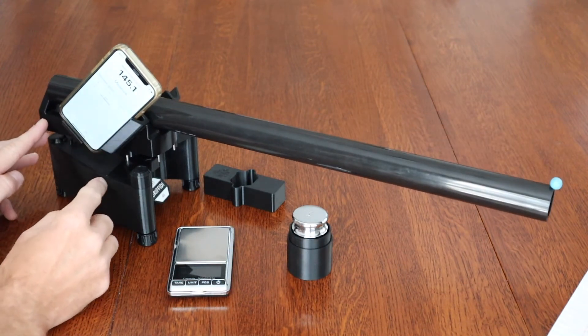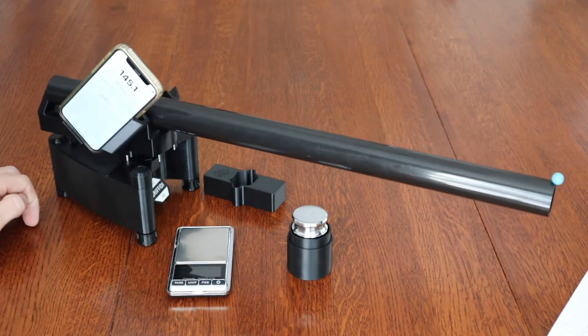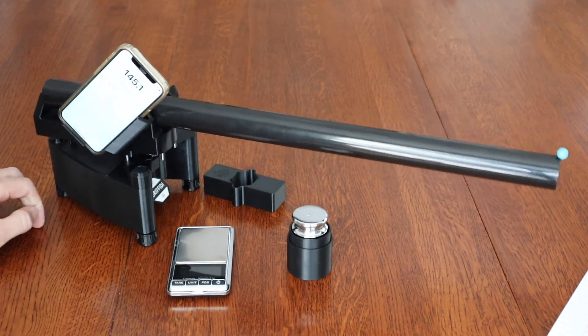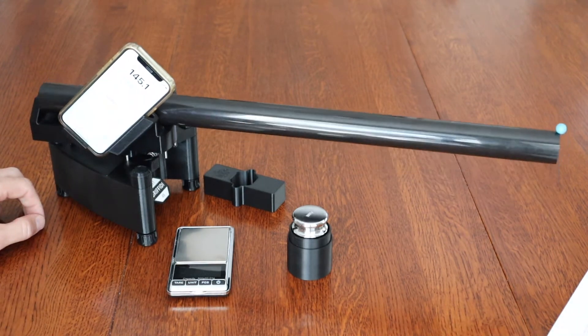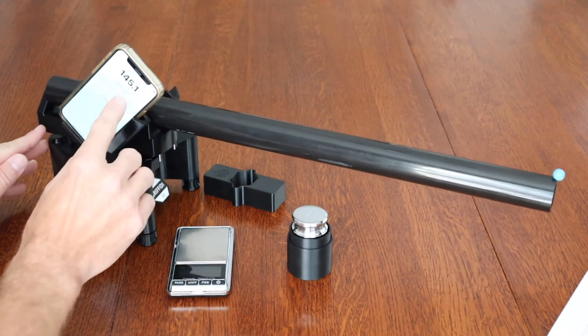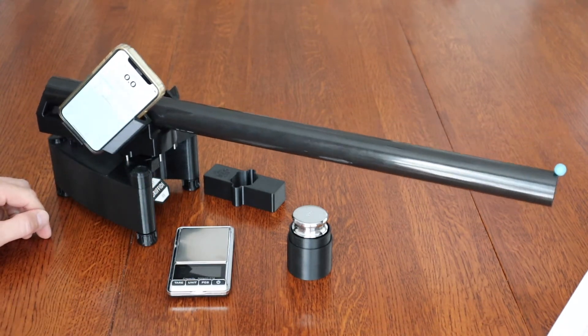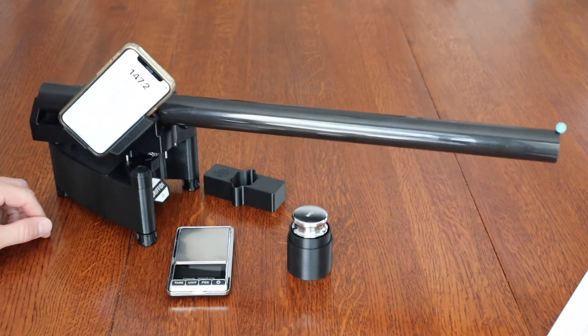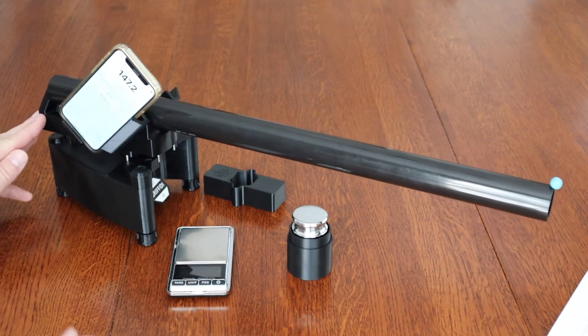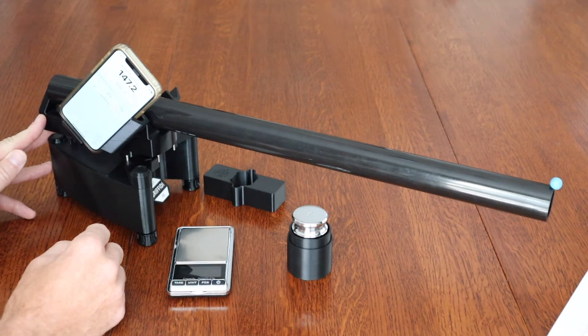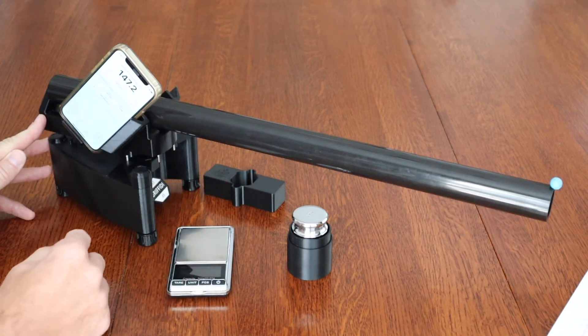Now if I add a measurement group, measure that, hit the measure button. So on the first measurement, it was 2.14 difference, but I'll do five again here.